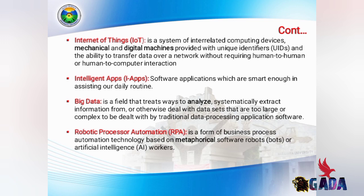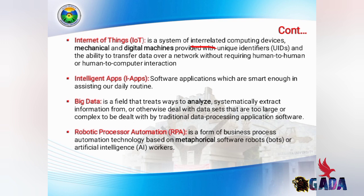The Internet of Things is a system of interrelated computing devices, mechanical and digital machines, provided with unique identifiers and the ability to transfer data over a network without requiring human-to-human or human-to-computer interaction.